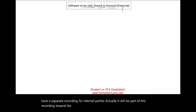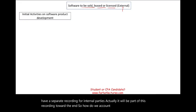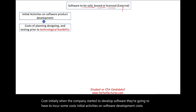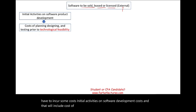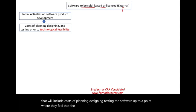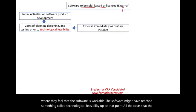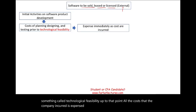How do we account for computer software costs? Initially, when companies start to develop software, they're going to have to incur some costs — initial activities on software development. That will include cost of planning, designing, and testing the software up to a point where they feel the software is workable, where the software might have reached something called technological feasibility. Up to that point, all the costs that the company incurred are expensed immediately, just like R&D.